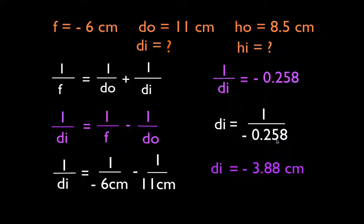The image distance is negative 3.88 centimeters. That's great because we said it has to be less than the focal length. The focal length is 6, and the image appears inside the focal point at 3.88. Negative means it's on the same side as the object. So we feel good that we have the correct image distance.